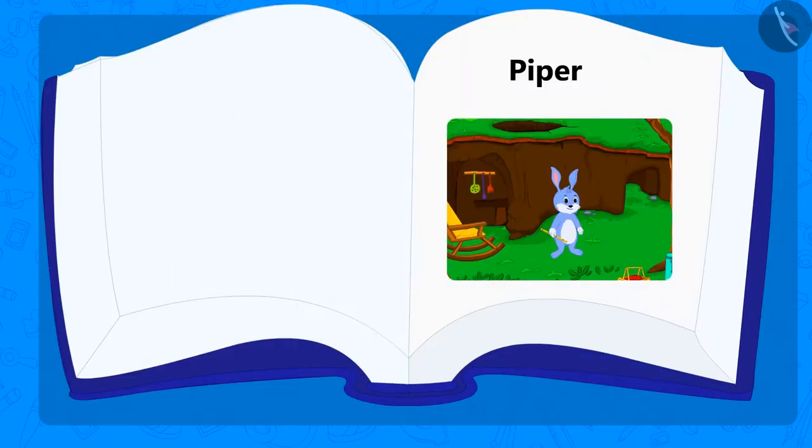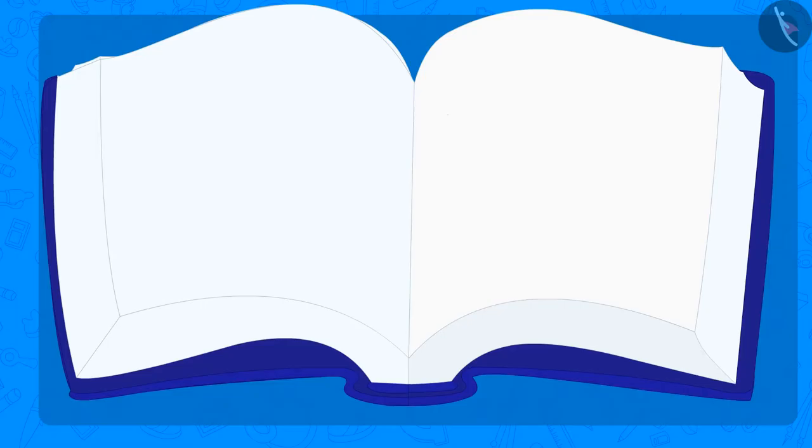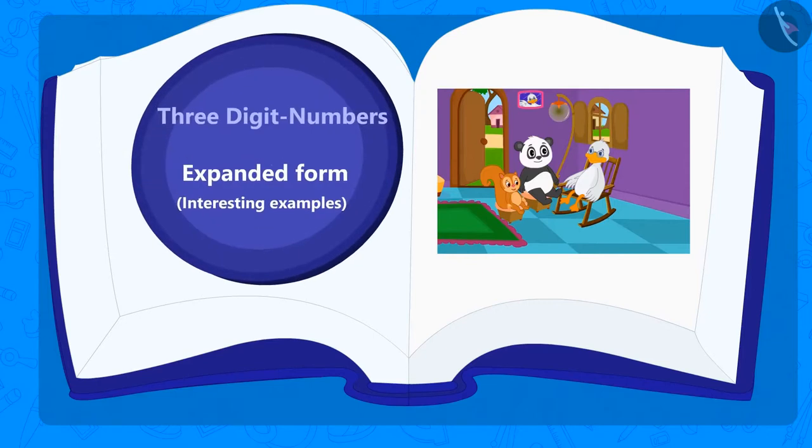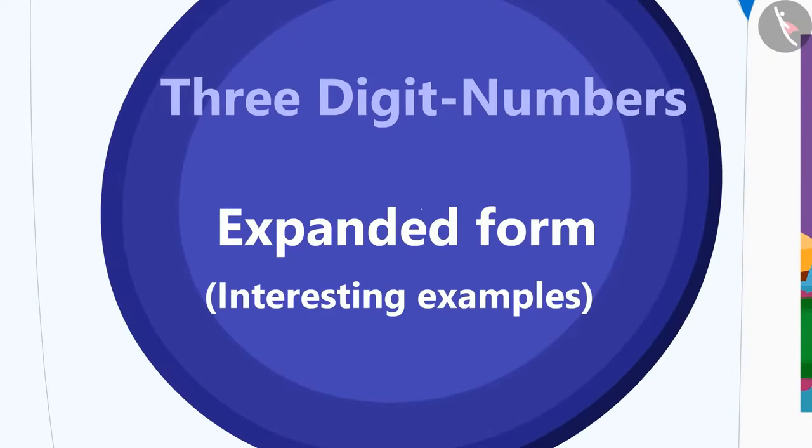In the previous chapter, we learned to write the expanded form of three-digit numbers through the story of the piper. Today, we will learn to write the expanded form of a three-digit number by its number name with the help of another interesting story from Uncle Big Mouth.